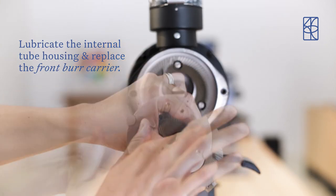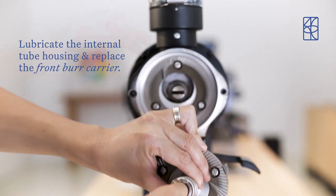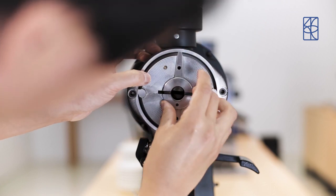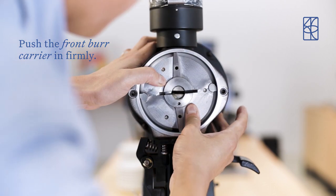Lubricate the internal tube housing and replace the front burr carrier. Push the front burr carrier in firmly.